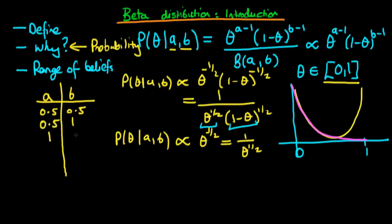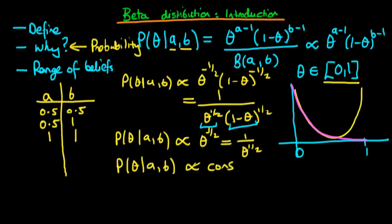Let's now think about the case when both a and b equal one. In that circumstance, theta to the power a minus one is theta to the power zero, which is just a constant. The second term, one minus theta to the power zero, is also a constant. So the probability is just a constant across our range — we get a uniform probability density, uniform across zero to one at a value of one, so the area integrates to one. We're already seeing that we can specify a range of different prior beliefs just by varying parameters a and b.